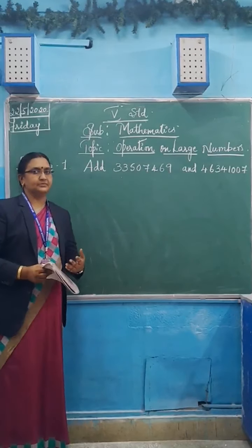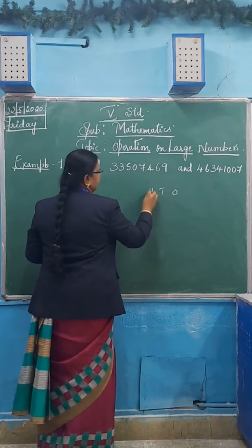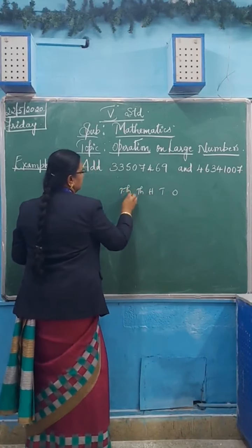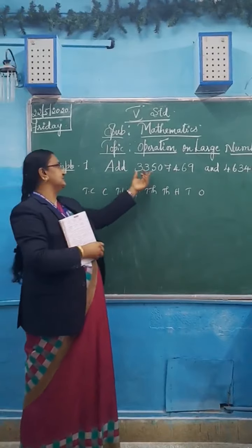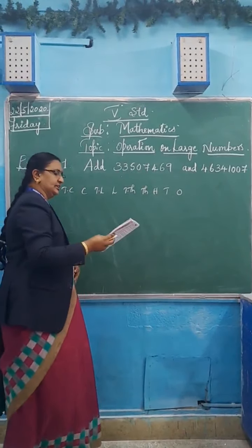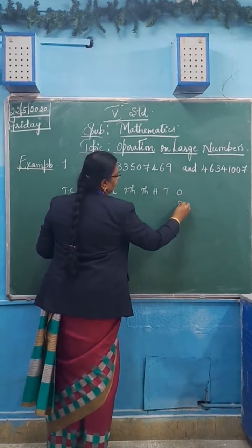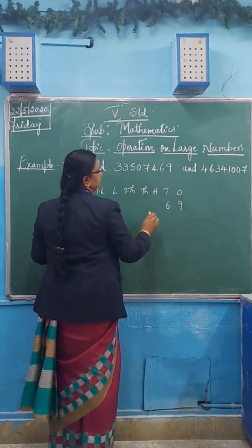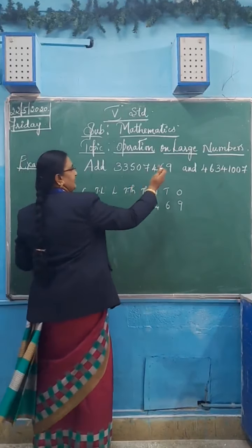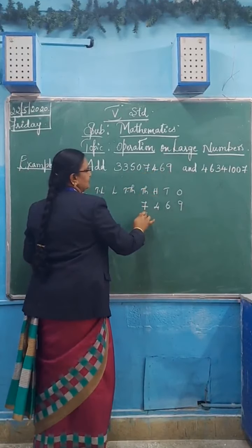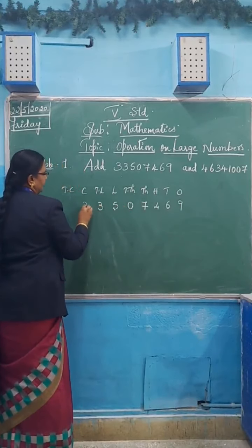How to add these numbers — first of all we will read the place values: ones, tens, hundreds, thousand, ten thousand, lakh, ten lakh, crores, ten crores. Now I place the first number according to these place values. We arrange the given numbers in columns and add according to the numbers. Nine in ones place, six in tens place, four in hundreds place, seven in thousands place. You have to place the numbers from the right hand side. Zero in ten thousands place, five in lakhs place, and three in ten lakhs and three in crores.